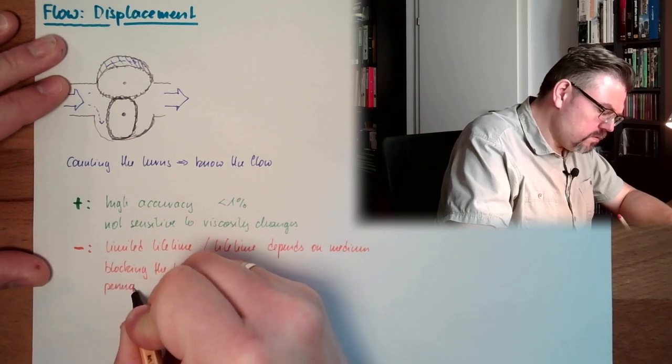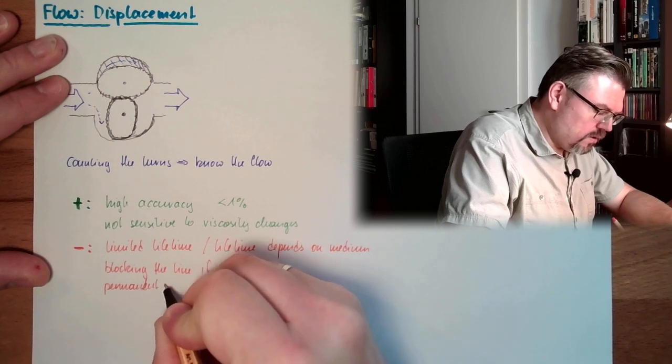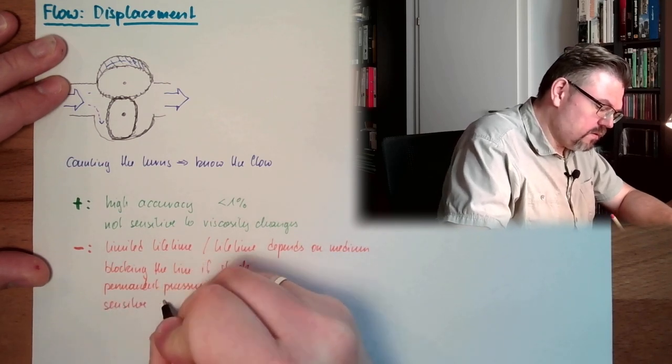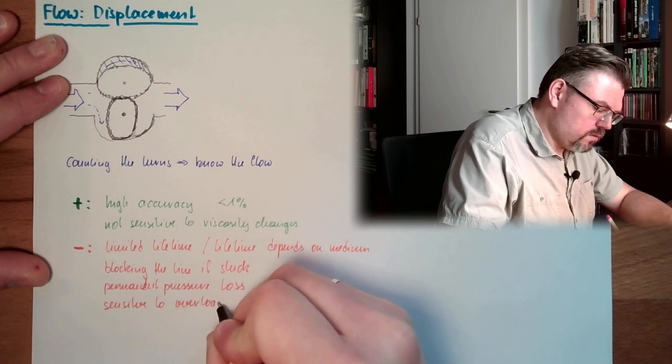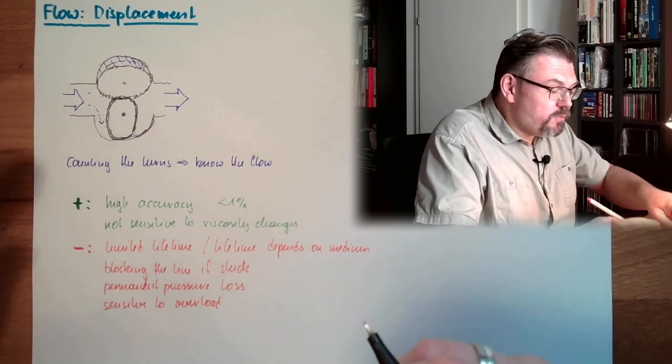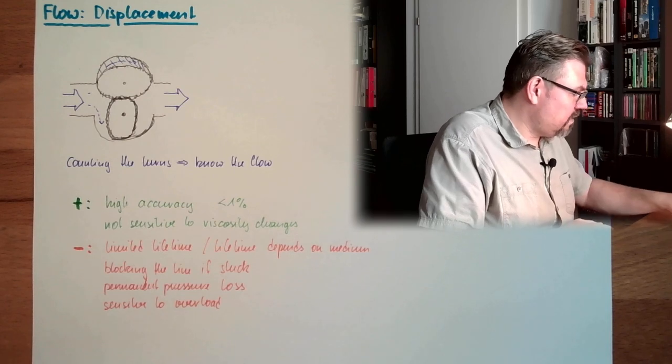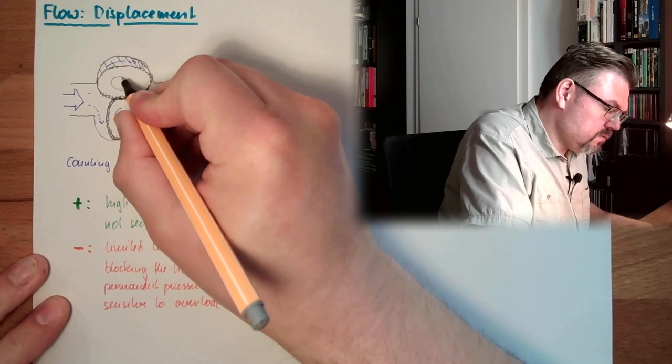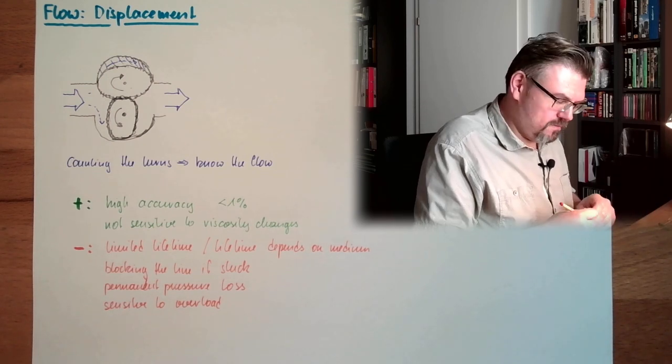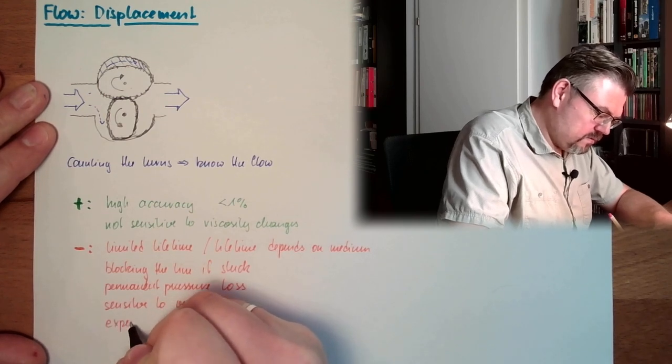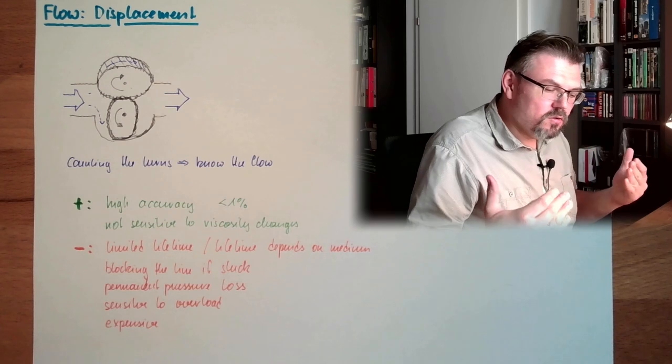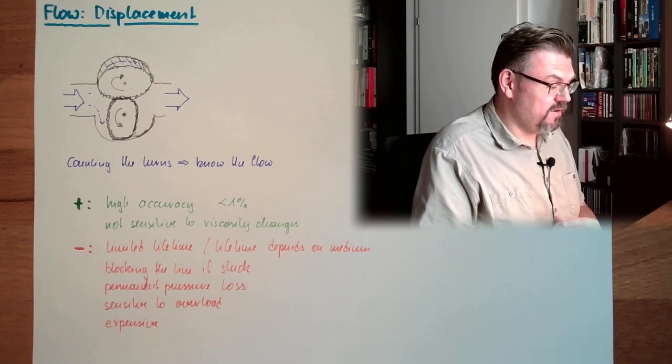We have permanent pressure loss. We are sensitive to overload, overflow in this case. So if there is more water or more liquid rushing through than this thing is designed for, it spins like crazy. Okay, maybe I should also write the spin directions here. And yeah, this is not working long. And we are expensive. High accuracy parts inside. We need high efforts to build it. So we are relatively expensive for this type of flow measurement.